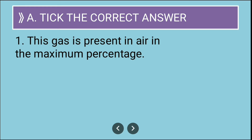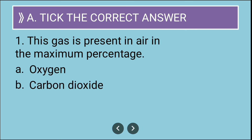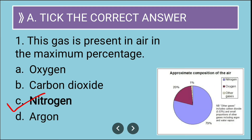The first MCQ is: this gas is present in air in maximum percentage. The options are oxygen, carbon dioxide, nitrogen, and argon. If you have read the lesson you can easily guess that nitrogen is the correct answer. As you can see from this pie chart, nitrogen is in maximum amount - almost around 79 percent among all the other gases present in air.